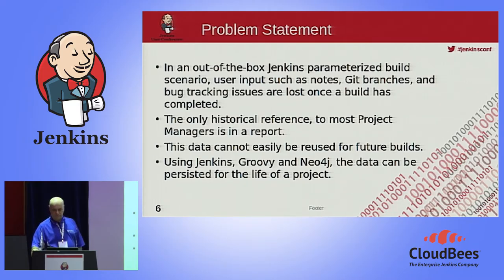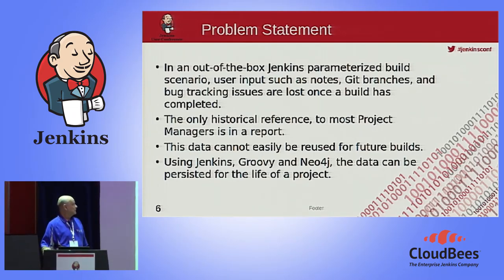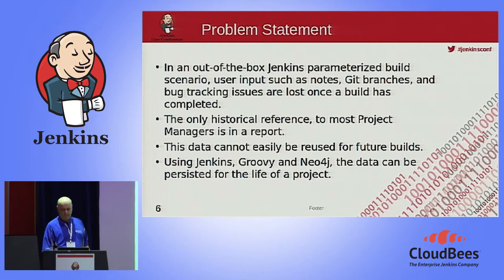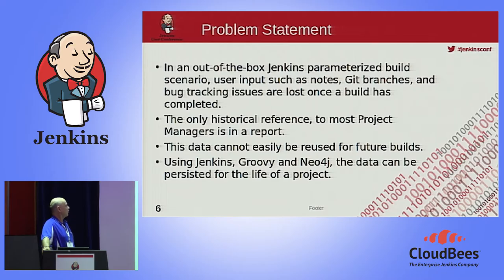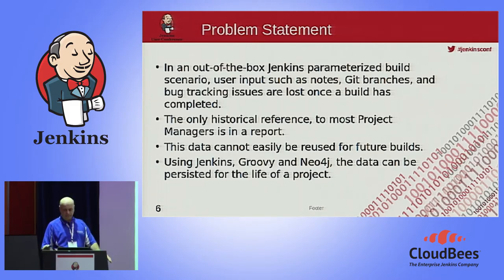Here's the problem statement and the reason for this presentation today. In the out-of-the-box parameterized build, when you want to collect information from users prior to running a build — such as git branches, notes, bug issue numbers — once you do that, it's gone unless you have a report. The only historical reference is in a report. In fact, the title of this presentation, 'Hey, what did we just release?' is a direct quote from one of our project managers after we released some software to production. So I'm going to show you how I use Jenkins, Groovy, and Neo4j to persist this data.